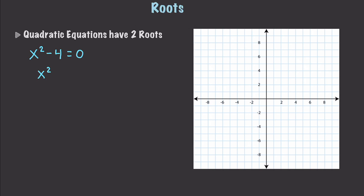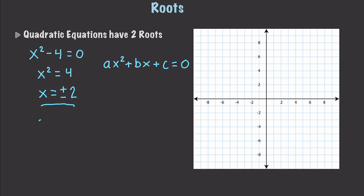Let's say x squared minus 4 is equal to zero. If we work this out, we see that x squared is equal to 4, which means x is going to be equal to plus or minus 2. All quadratic equations have two roots because every single one of them is degree 2 — that's what you get with ax squared plus bx plus c equals zero. If we know the roots, we also know the factors, which in this example are x plus 2 and x minus 2.